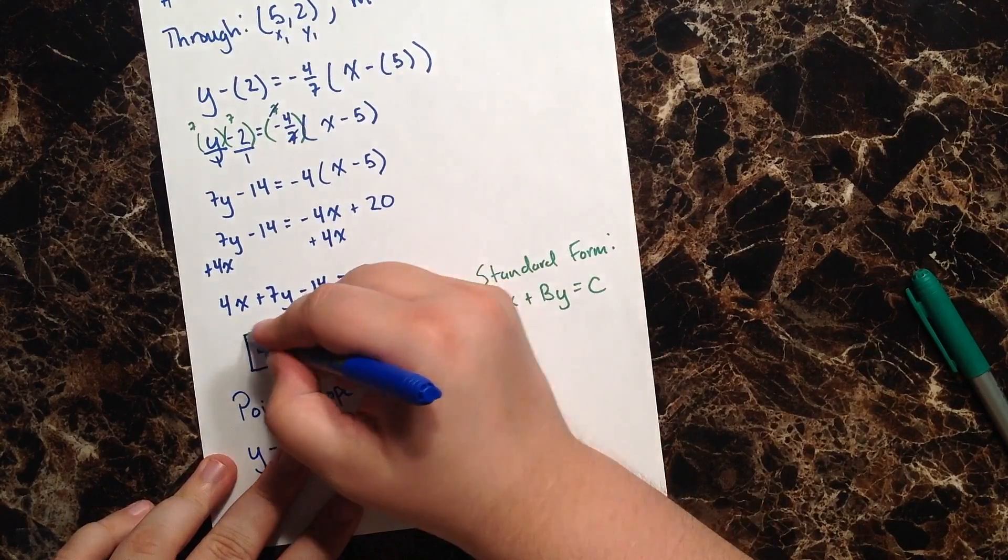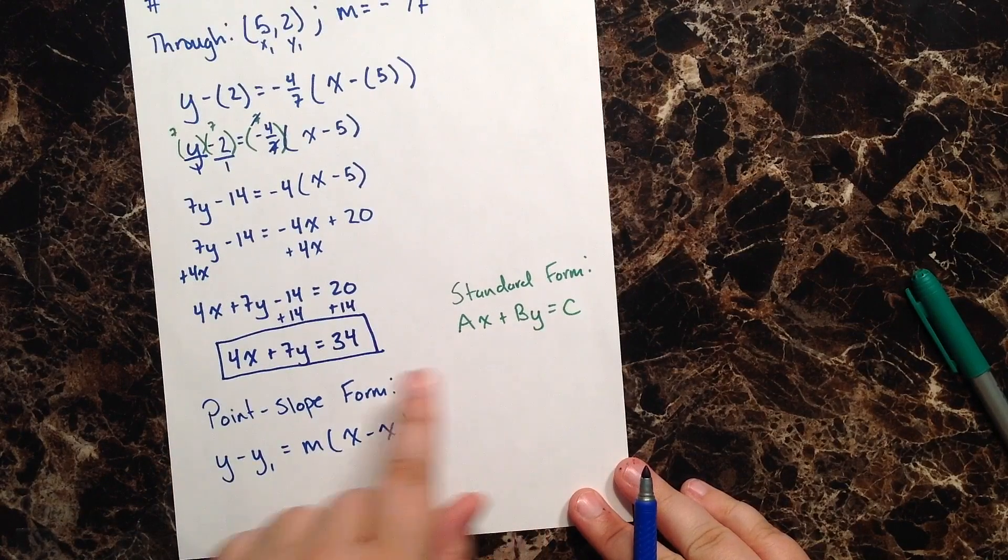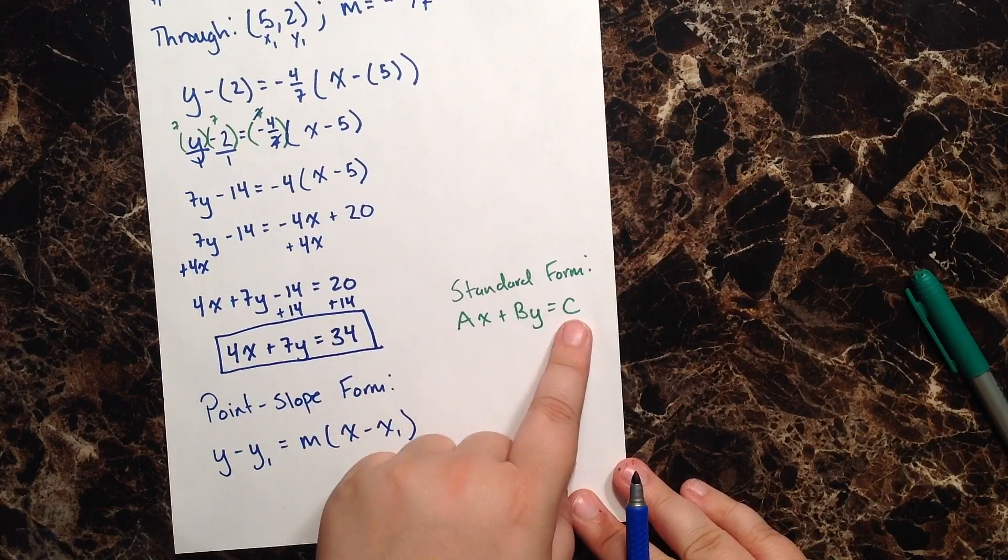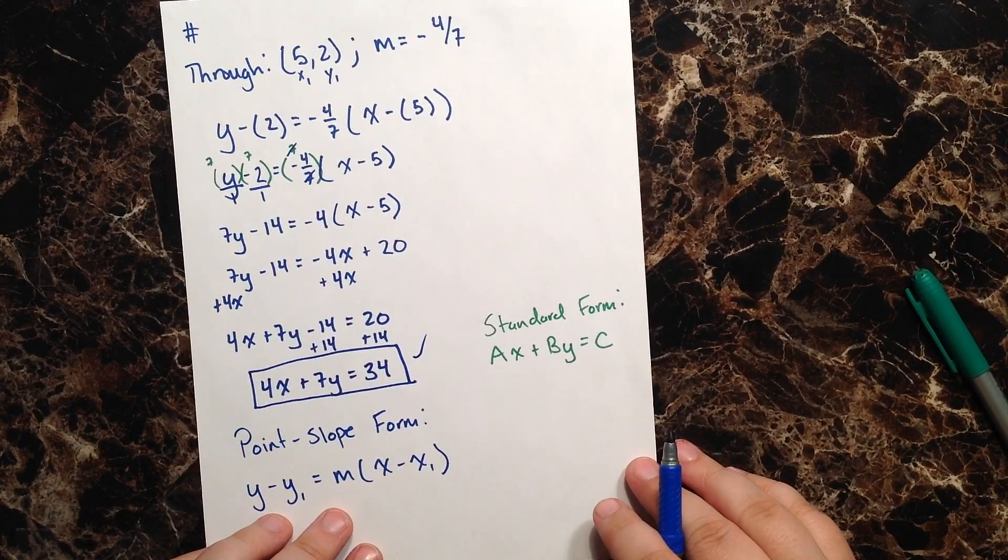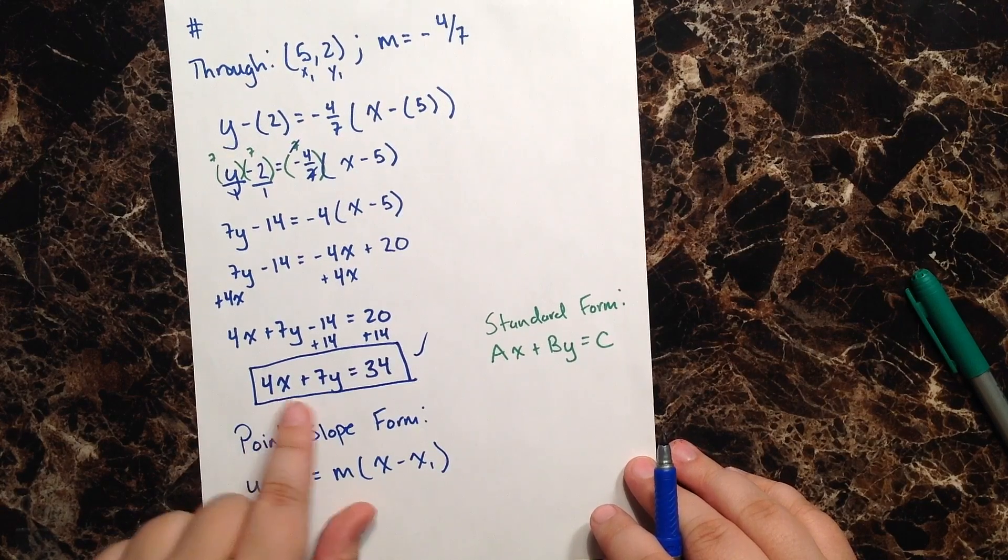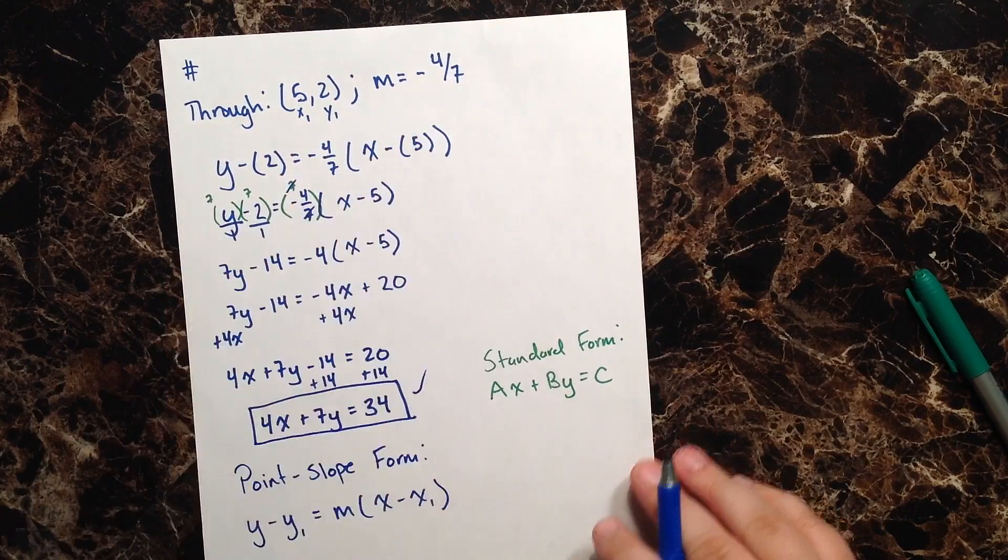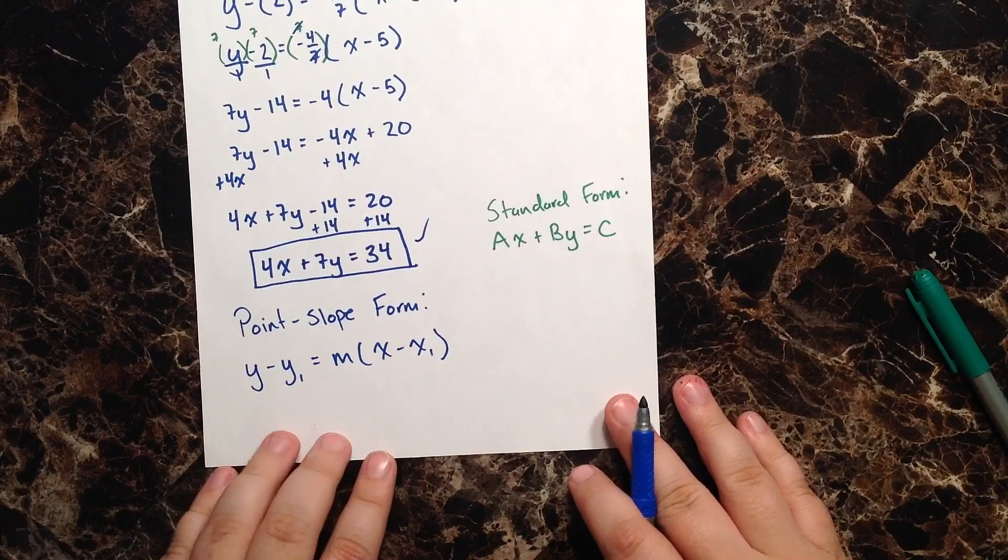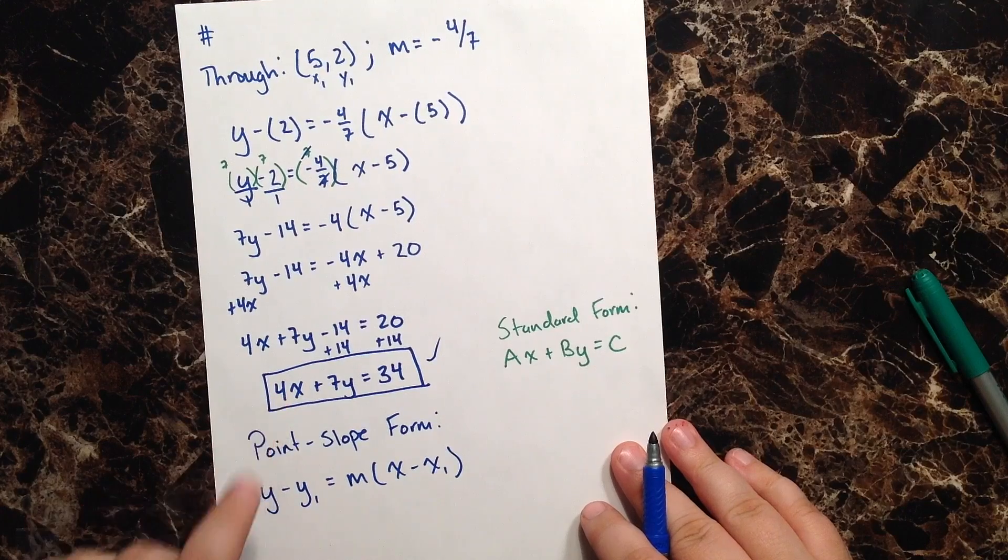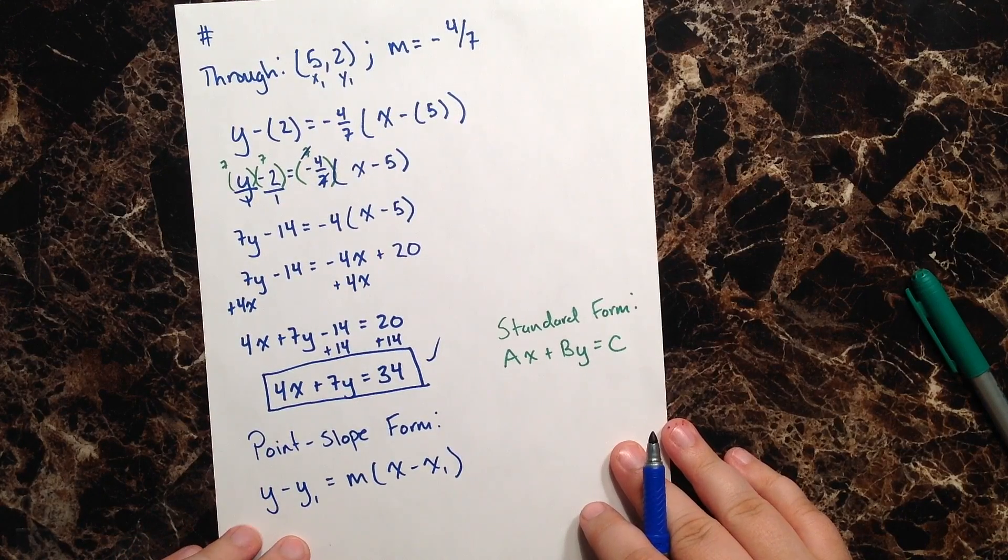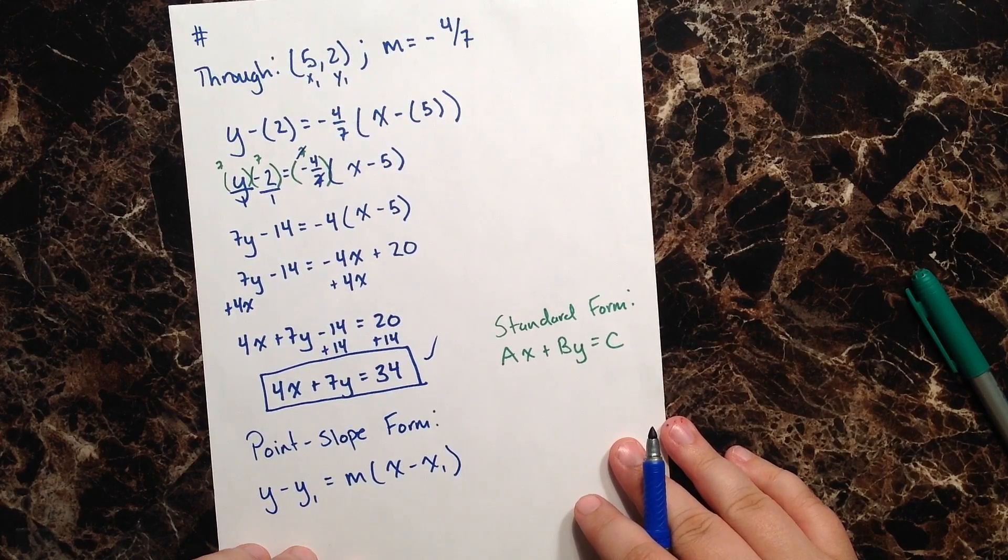And now this looks pretty good. I have my x and my y, and my constant on the opposite side. So that looks good to me. All right, so that is how we write the equation of a line in standard form, given a point and a slope using the point-slope form. We simply plug in the information and simplify. And there we have it. That was question number 4. I hope this was a helpful review. I will see you all at question number 5. Thanks for watching.